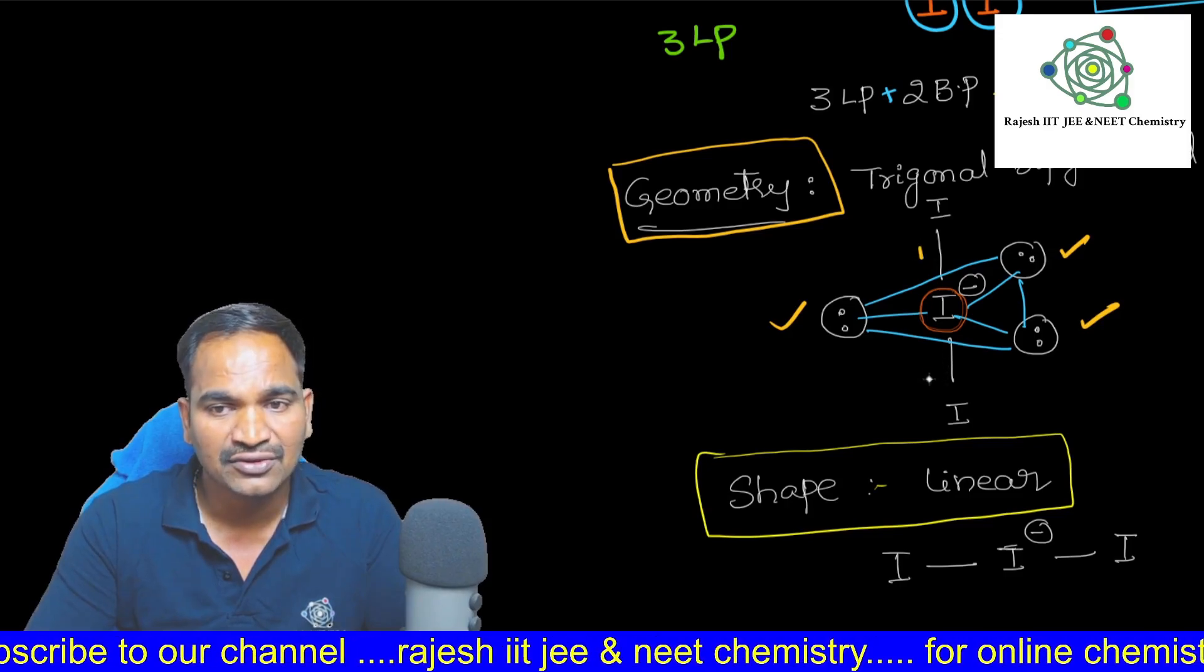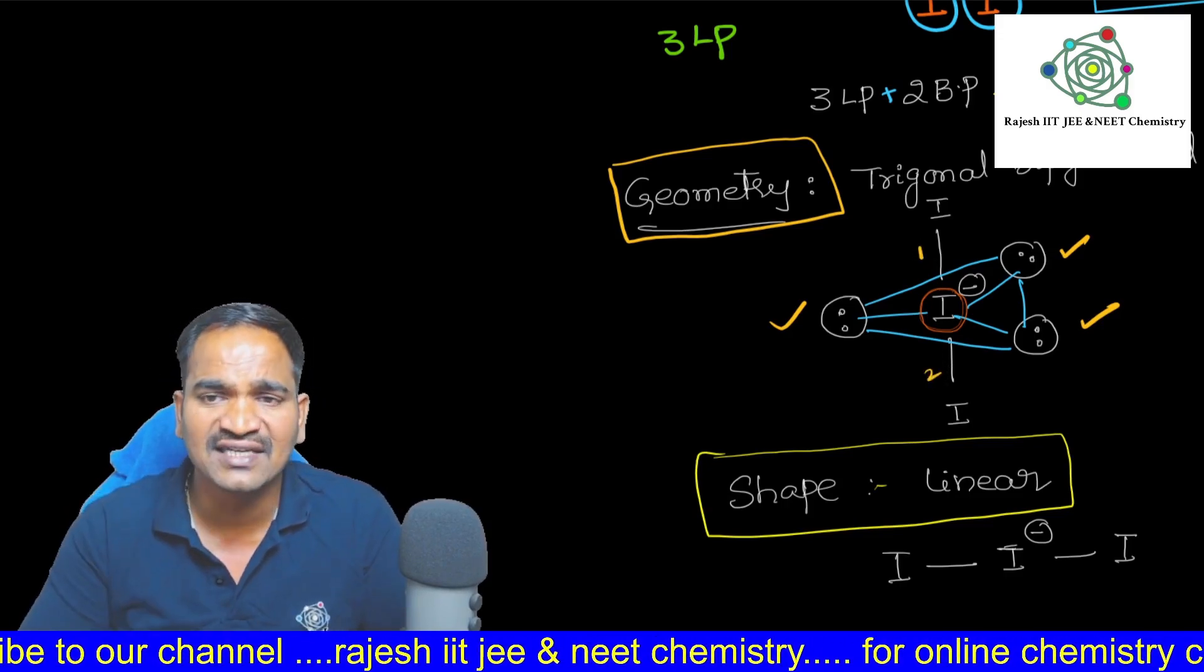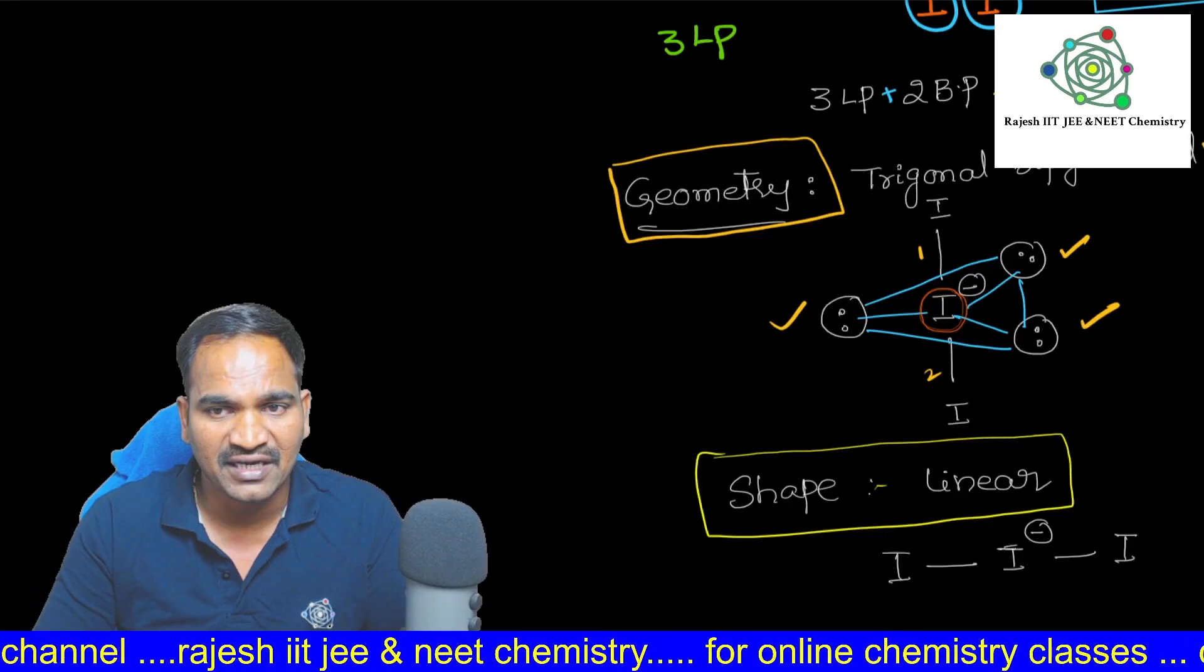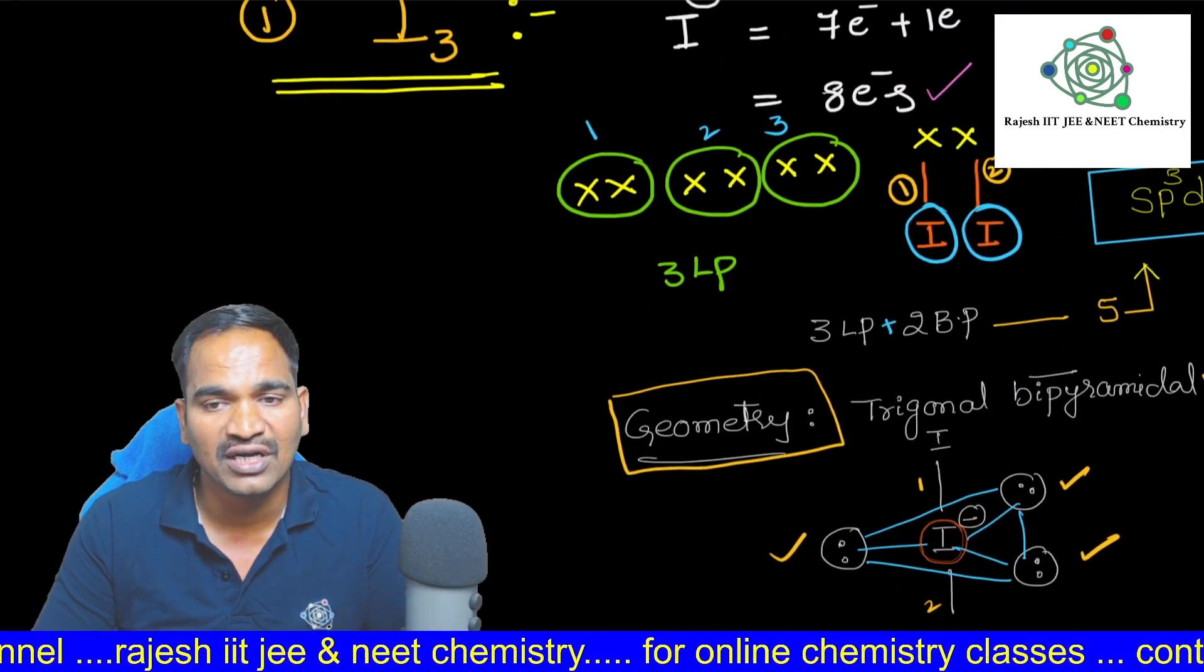Two bond pairs, 1, 2. If you consider all, the geometry will be trigonal bipyramidal. Trigonal bipyramidal.